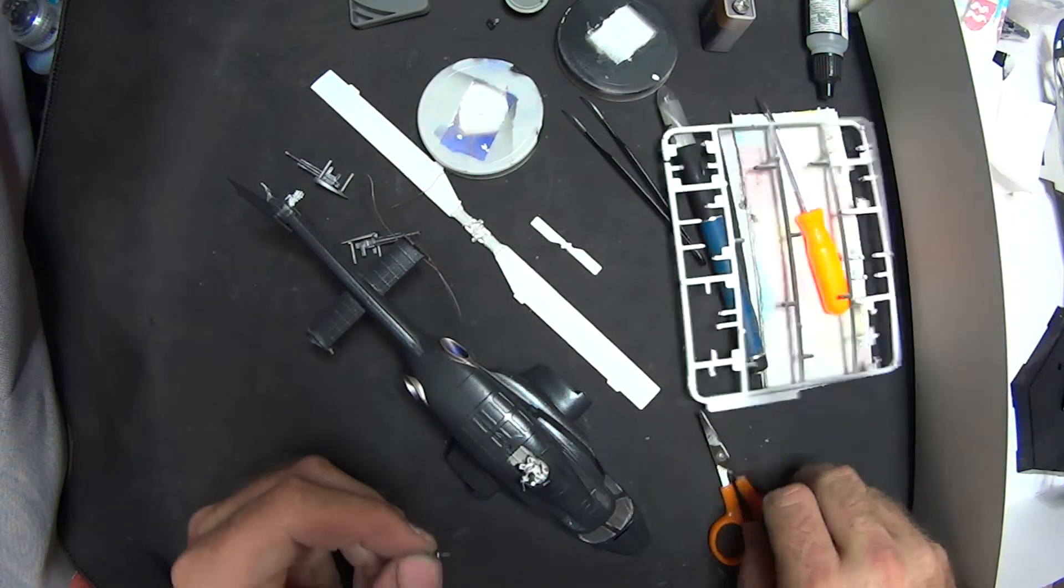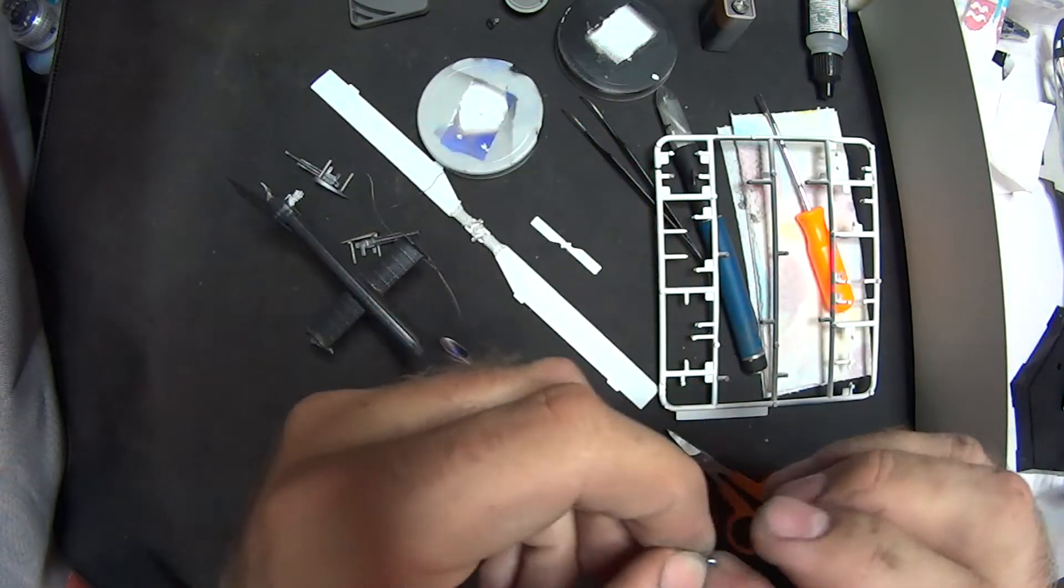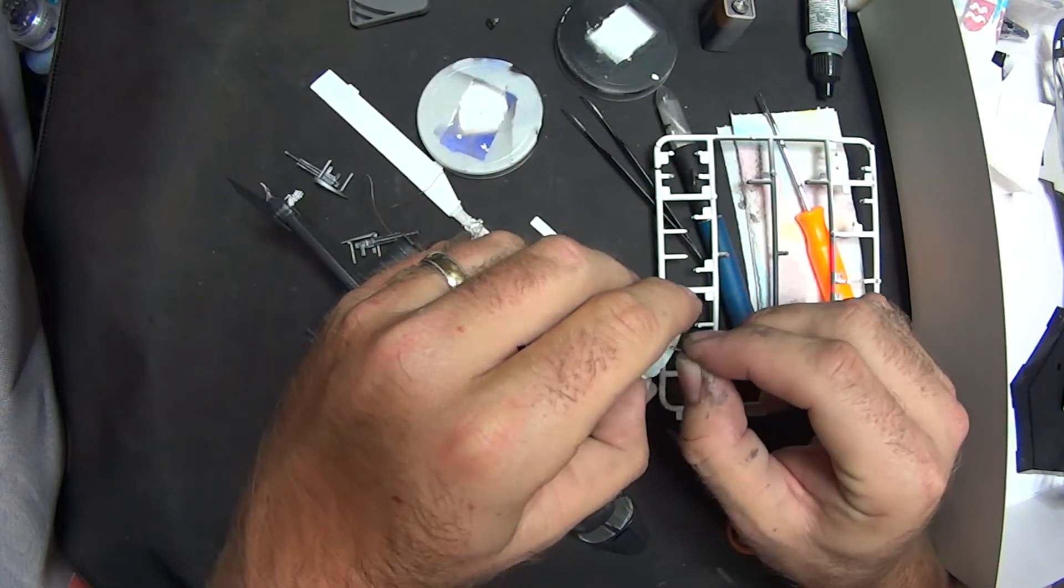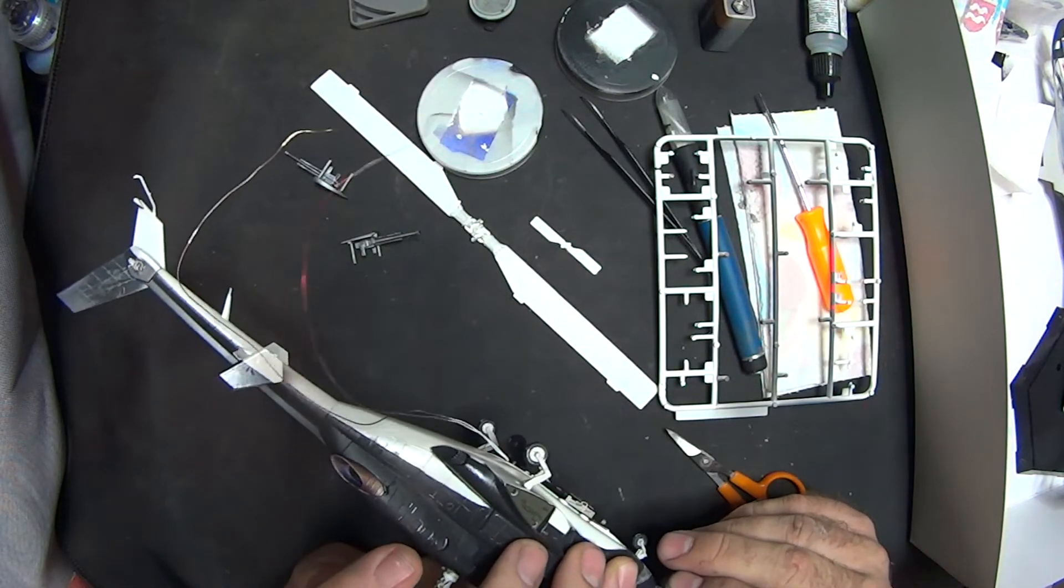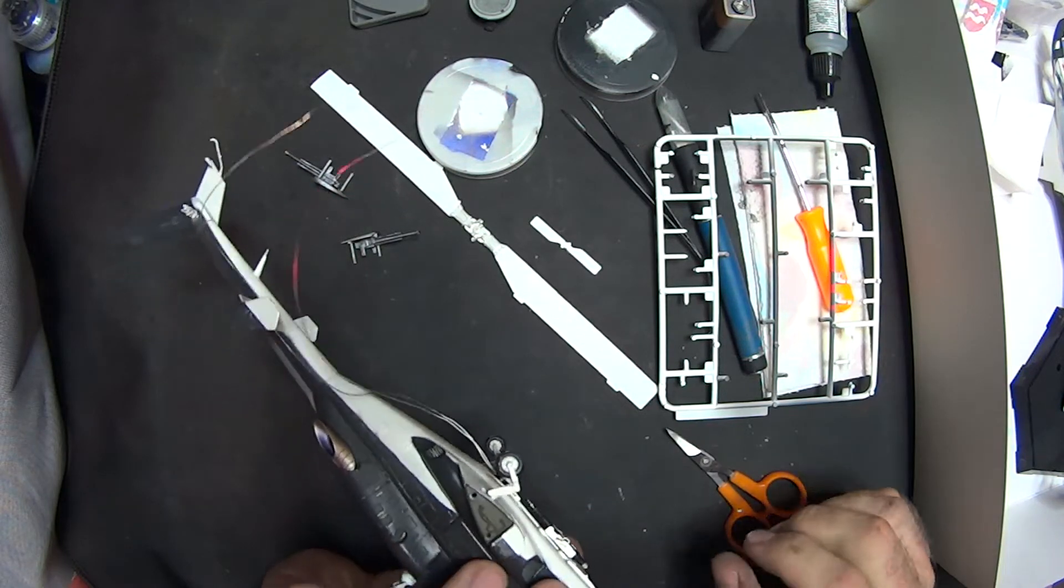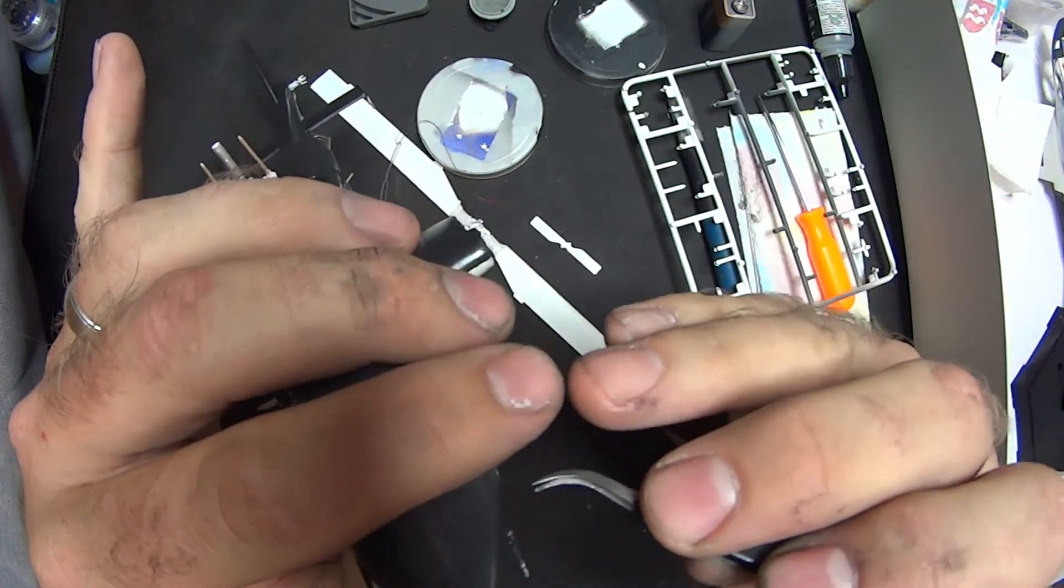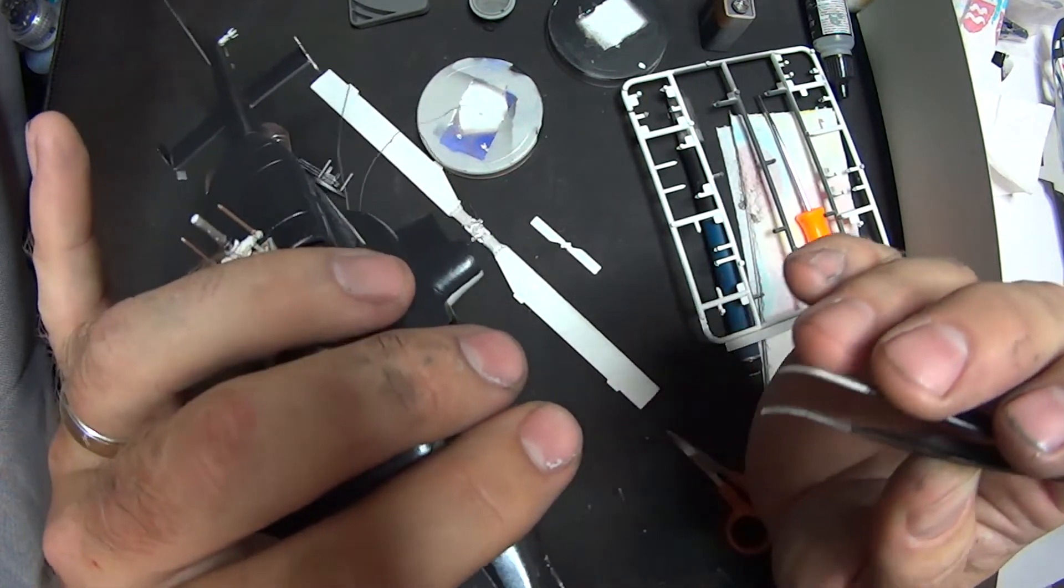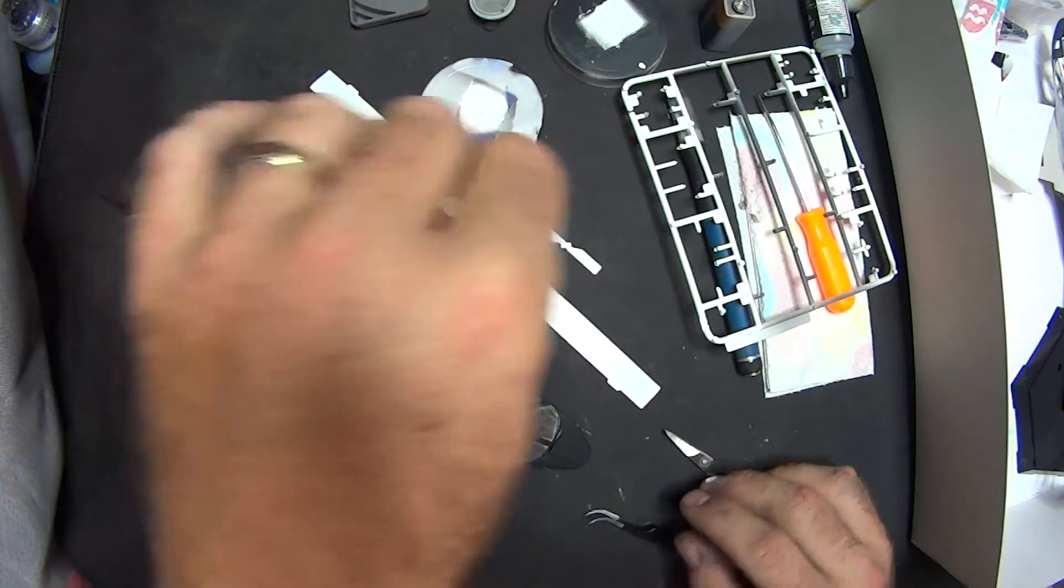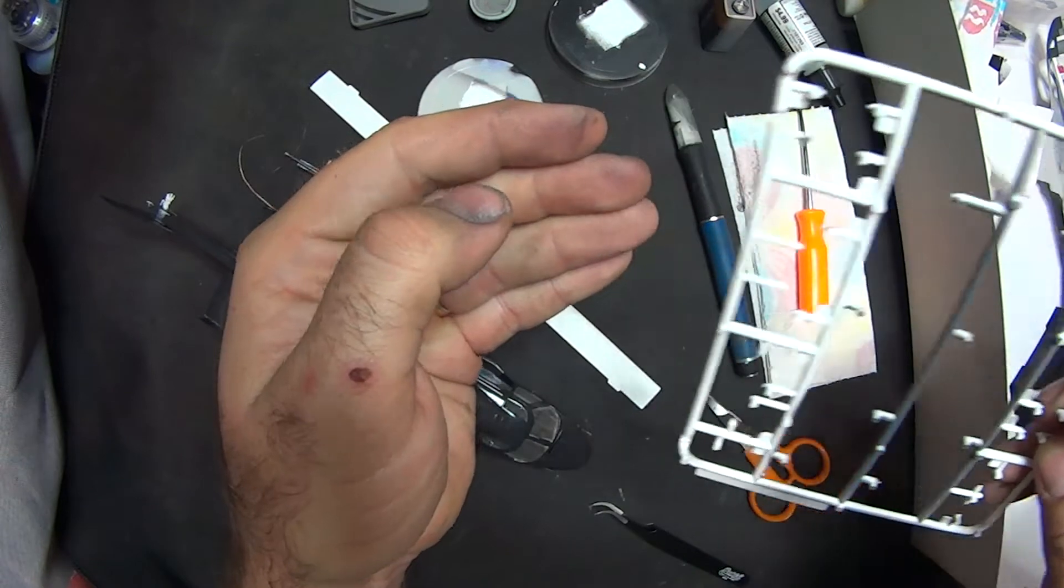I do have two little pieces on here, these two little antennas that go on the front. Cut those out. You got to be careful with these because these are very small. Let me get the tweezers.